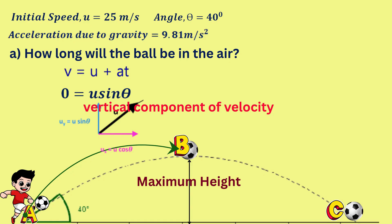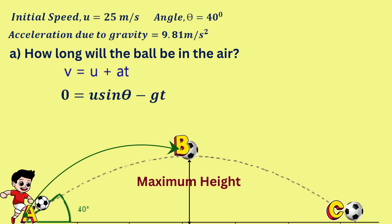Replace a with negative g since the acceleration is due to gravity and the gravitational force is acting against the ball while it's on its way up.